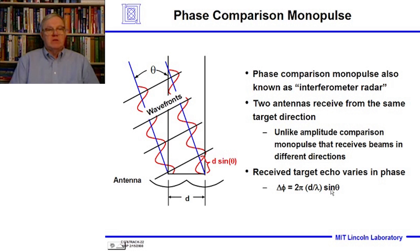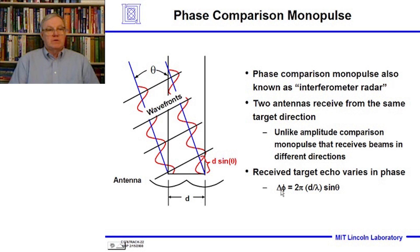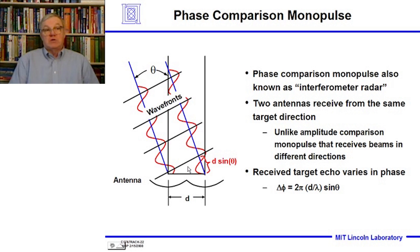That is the phase difference. If you measure the phase difference between the signal arriving at antenna 1 and antenna 2, and you know the distance between the two antennas and the wavelength, you can deduce exactly what angle the radiation came in at. That is how phase comparison monopulse techniques work. Unlike amplitude comparison monopulse, which receives beams in different directions, this receives radiation from one direction but at two antennas.